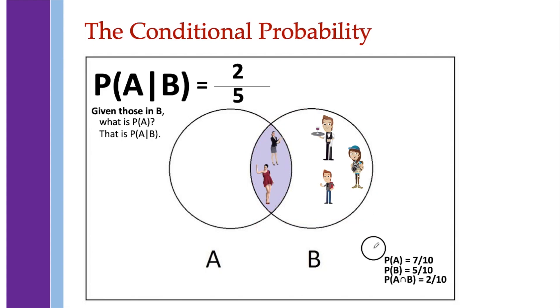And taking a look at these answers, 2 over 5 may be derived using this value and this value. So meaning 2 over 5 is the same as 2 over 10 all over 5 over 10.